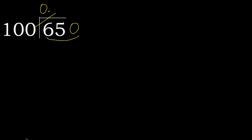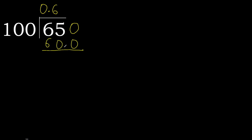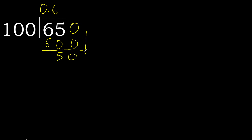100 multiplied by which number is nearest to 650 but not greater? 100 multiplied by 7 is 700 — that is greater. Multiplied by 6 is 600 — not greater. Ok, perfect. Subtract 50, next.